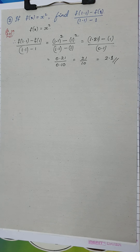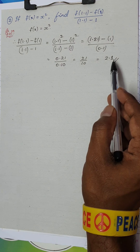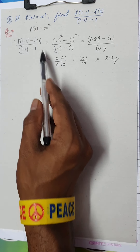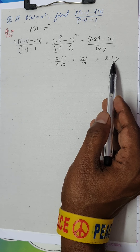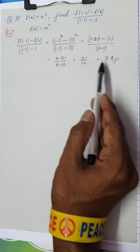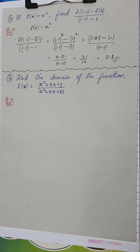Simplifying: 0.21 / 0.10 = 21/10 = 2.1. So the value of [f(1.1) − f(1)] / (1.1 − 1) is simply 2.1. This is for this particular function and these particular values.